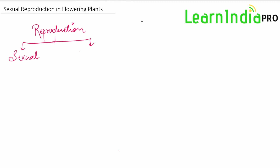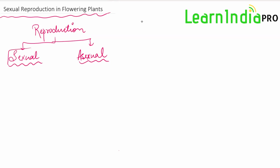Hello everyone, welcome to Learn India Pro. This is Sonia. I hope you all are fine. Today we'll be starting with the second chapter of Class 12, that is Sexual Reproduction in Flowering Plants. In the previous chapter, we saw that reproduction is the process wherein an individual gives rise to young ones of a similar kind, and reproduction can be of two types: sexual reproduction and asexual reproduction. This video is basically the introduction to the chapter, covering what the chapter title denotes. The chapter title is Sexual Reproduction in Flowering Plants.